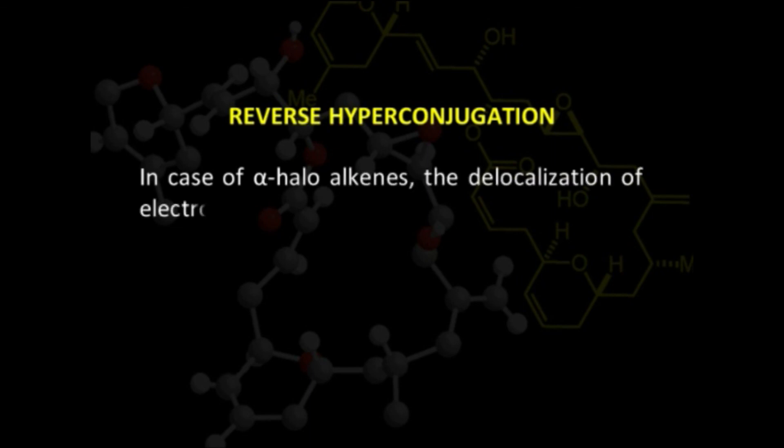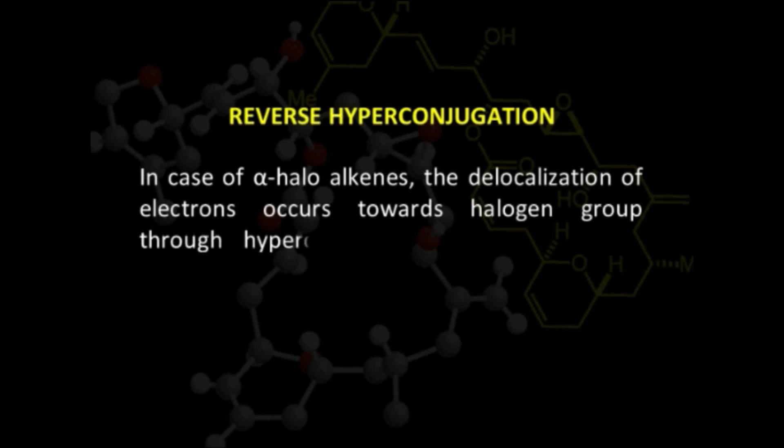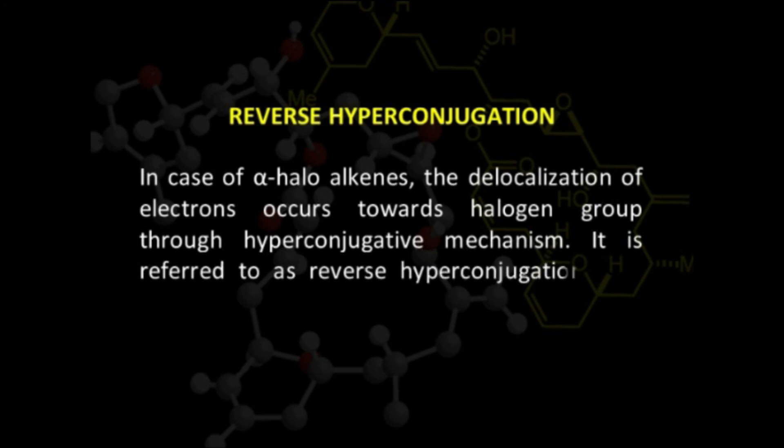Reverse hyperconjugation is a phenomenon opposite to hyperconjugation. In hyperconjugation, electrons present in carbon-hydrogen sigma bonds are released towards a carbon-carbon pi bond or a p orbital. In the case of alpha-halo alkenes, delocalization of electrons occurs towards the halogen group through a hyperconjugative mechanism, but the direction is opposite. Therefore, it is known as reverse hyperconjugation.